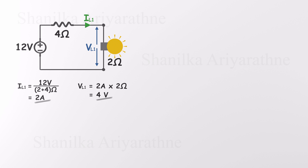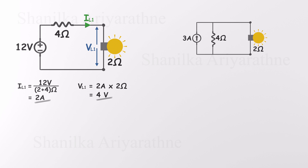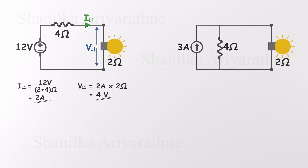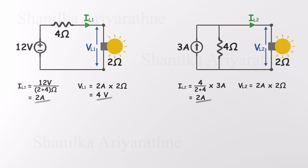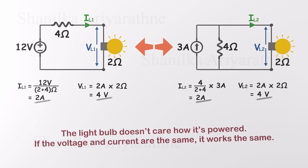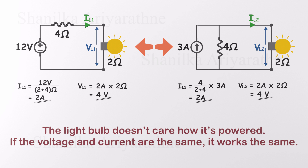Now let's try something different. We power the same light bulb using a 3 amp current source in parallel with a 4 ohm resistor. Since the 4 ohm resistor and the 2 ohm bulb are in parallel, we use the current divider rule to find how much of the 3 amps goes through the bulb. The result: current through the 2 ohm bulb is 2 amps, and the voltage across it is again 4 volts — same current, same voltage, just like before. The light bulb doesn't care how it's powered; as long as it gets the same voltage and current, it behaves exactly the same.